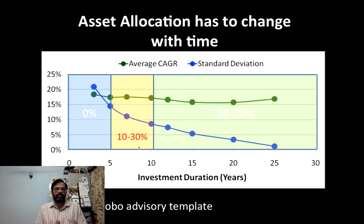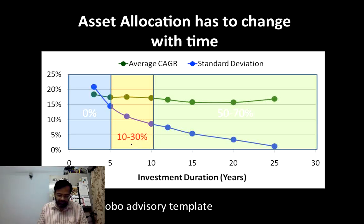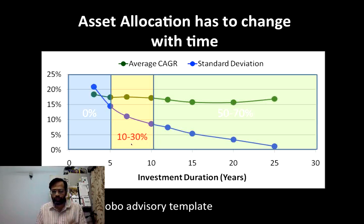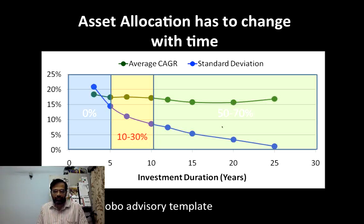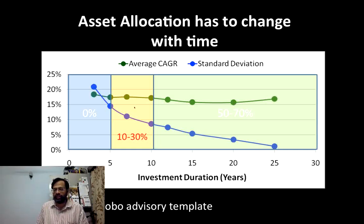What is very important is that the asset allocation must change with time. I give this example all the time: I started investing for my son's education just before he was born. My son is almost 9 now, but when I started I had 18 years for him to enter college. Now that 18 years has cut down to 9 or 10. What was a long-term goal for me 9 years ago has now become an intermediate-term goal.